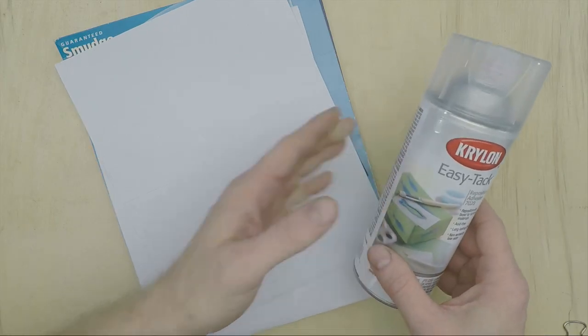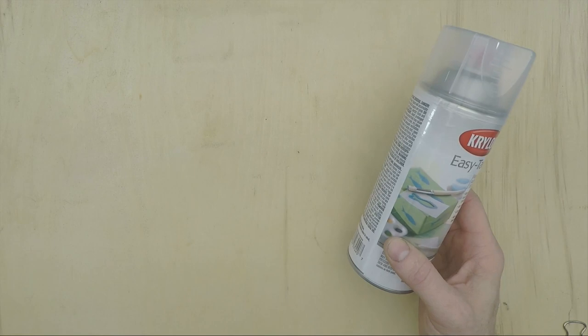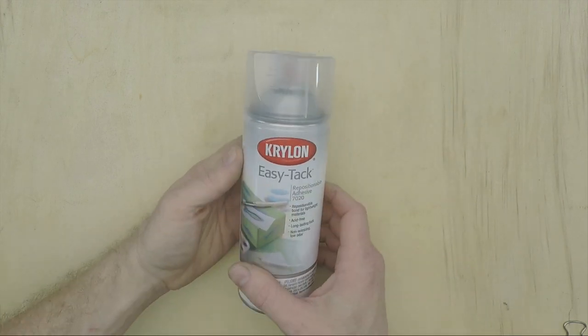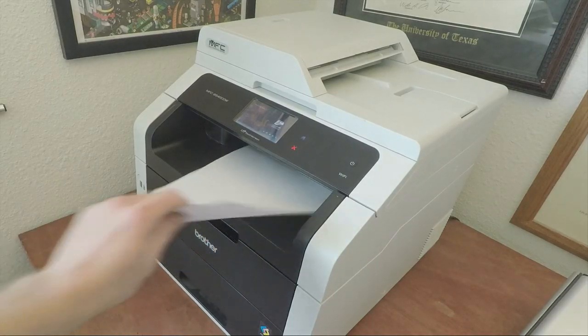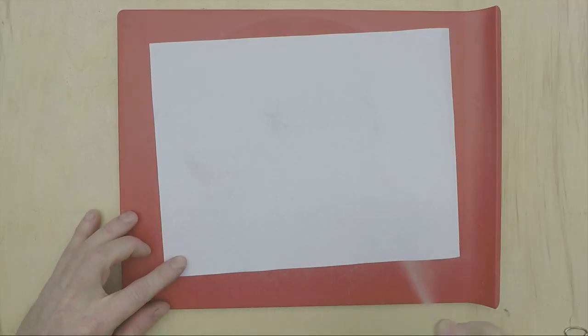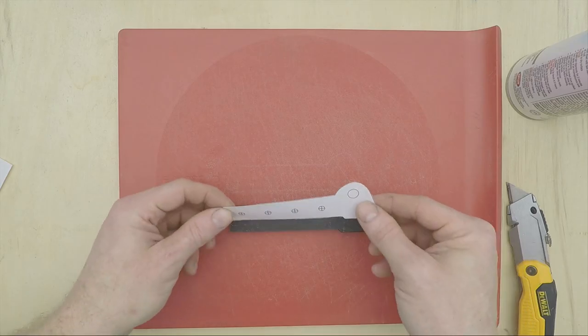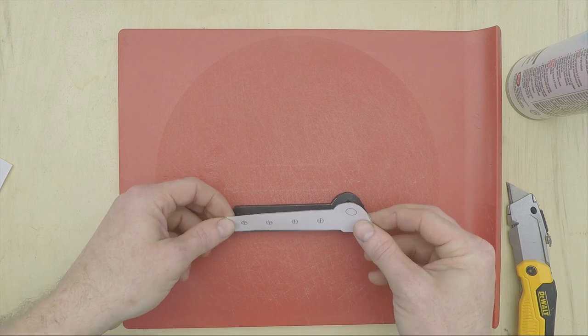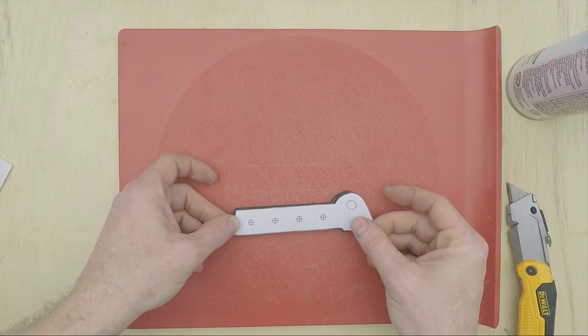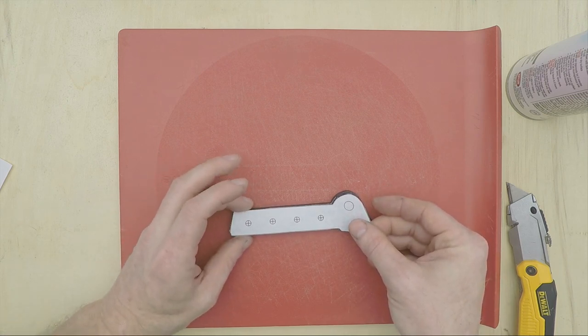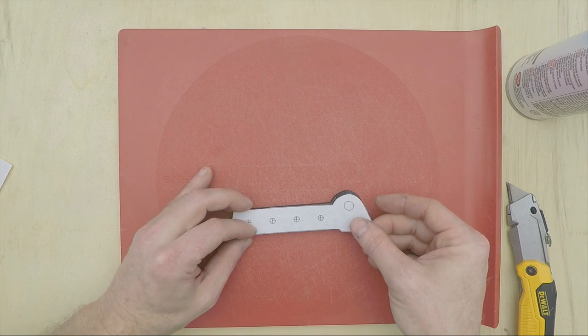So lately I've been experimenting with using this spray-on repositionable adhesive instead. I just print the template onto normal printer paper, give it a few sprays of this stuff on the back, and because it's repositionable, I can massage it into place without worrying about having to start all the way over if I make a mistake lining it up.